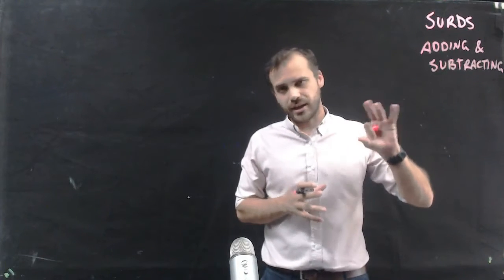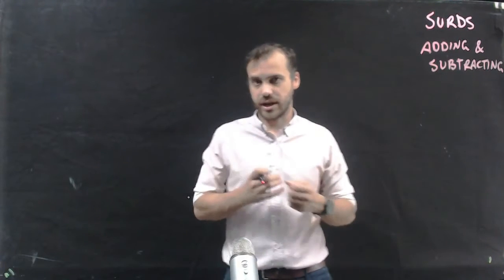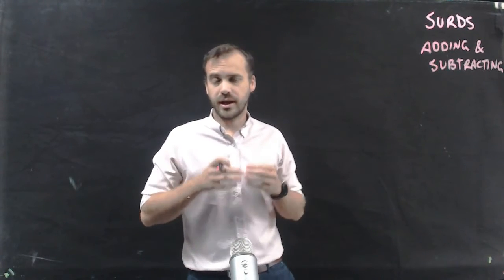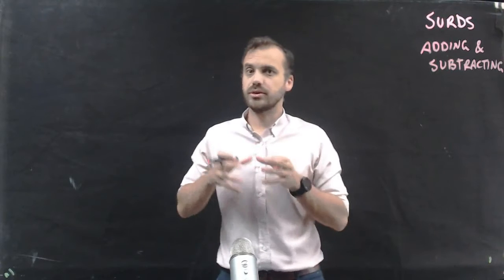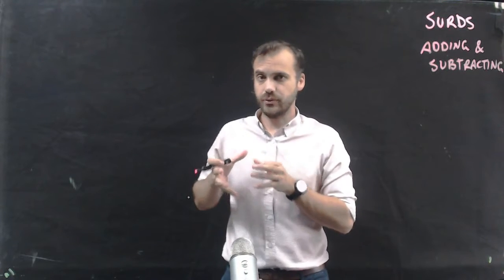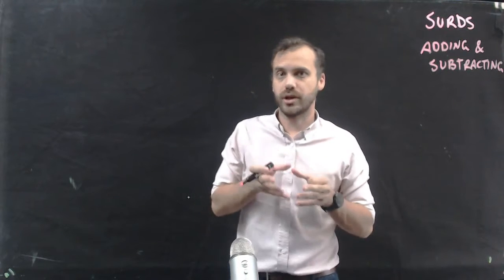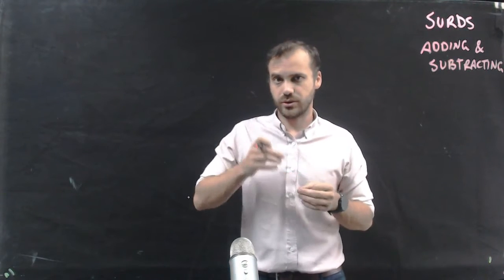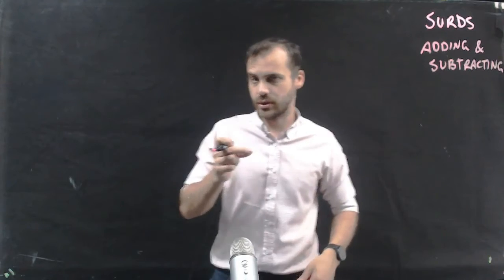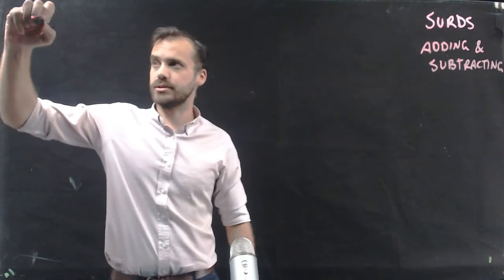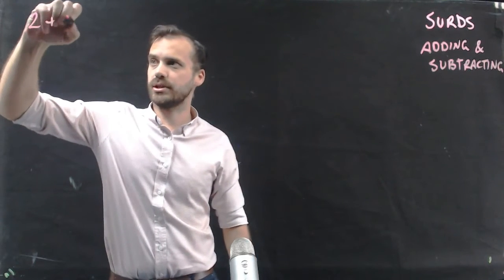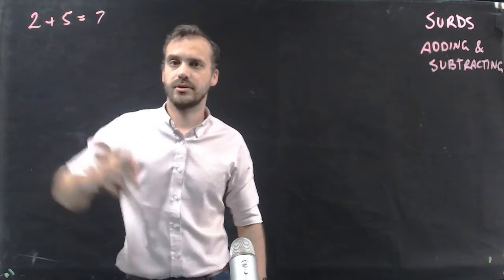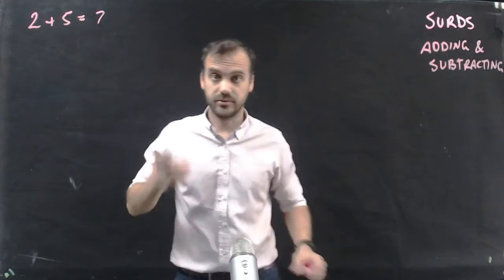In this video we're going to be adding and subtracting surds. This is a skill you already have — we're just going to apply it to surds. So, adding numbers: 2 plus 5 equals 7. Done.